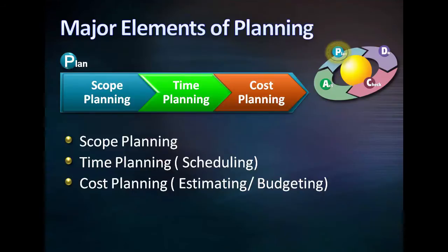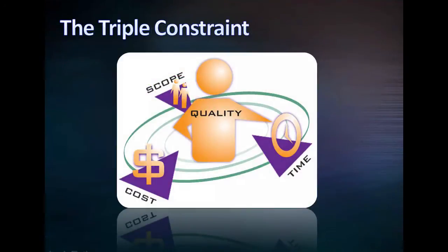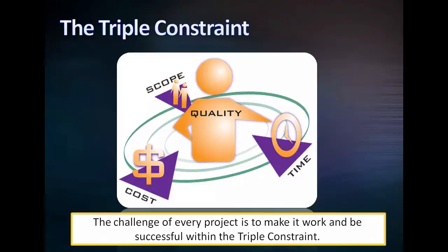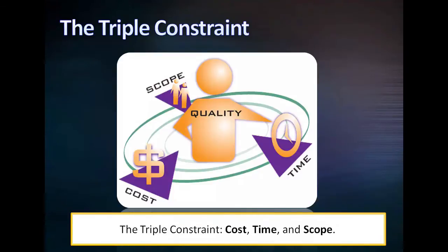Furthermore, scope, time, and cost forms the triple constraints of a project. The challenge of every project is to make it work within the triple constraint. The triple constraint is cost, time, and scope.